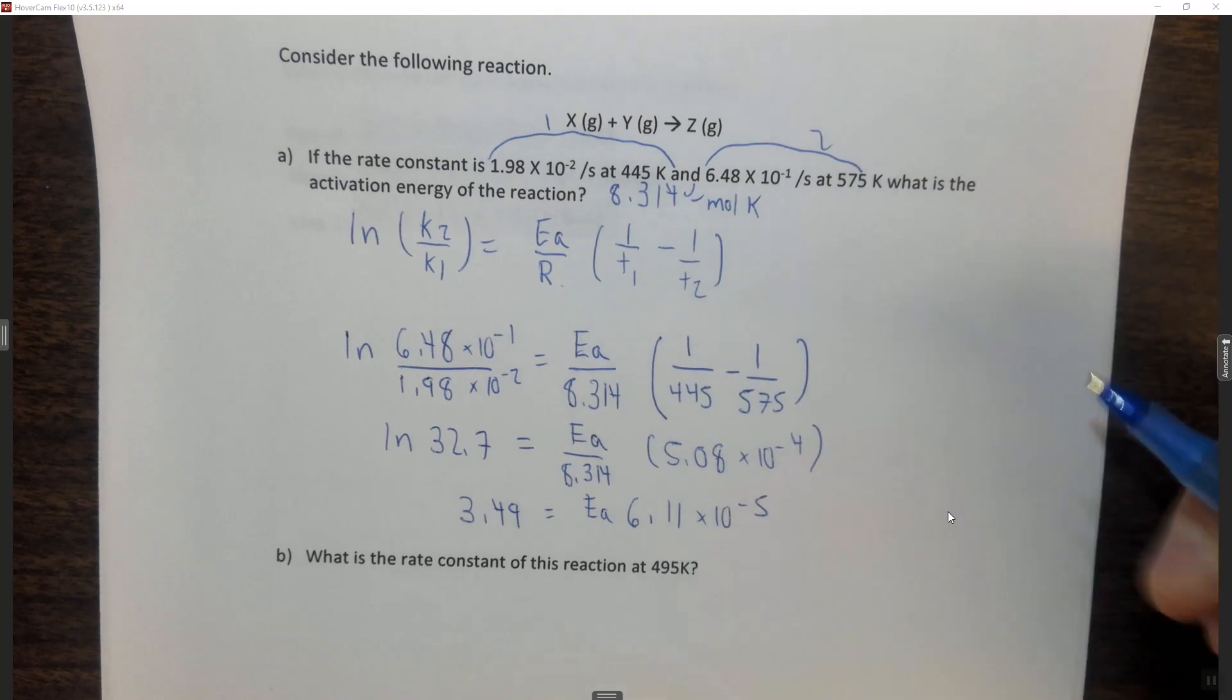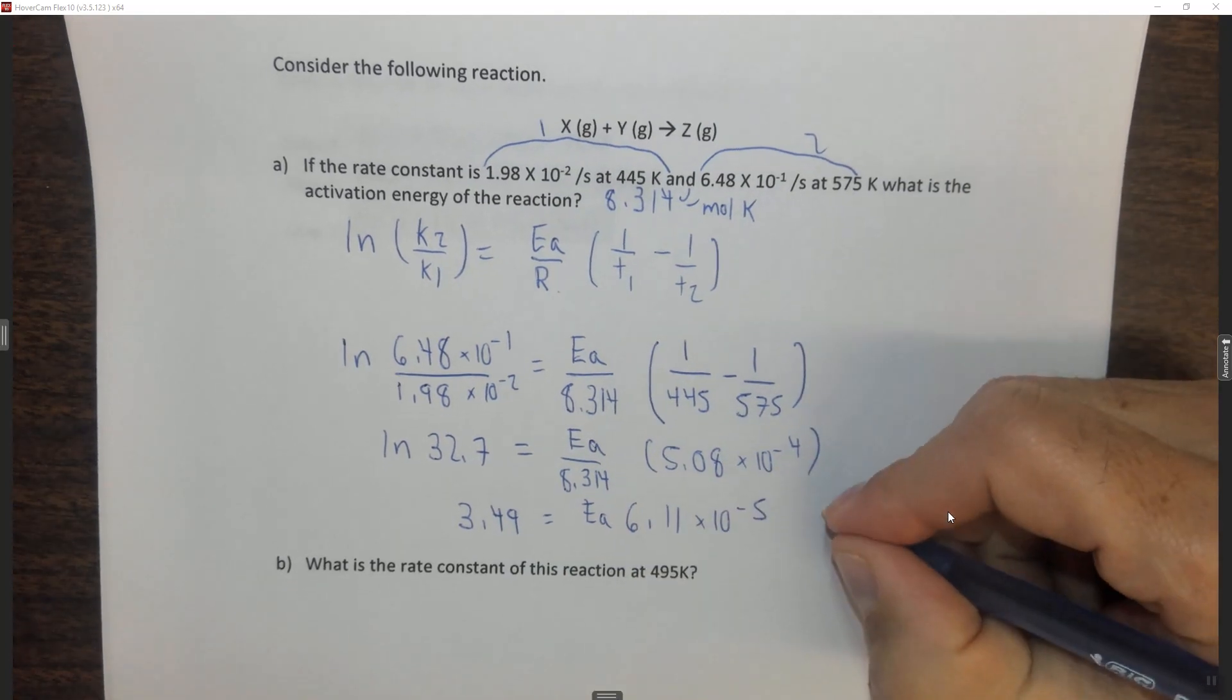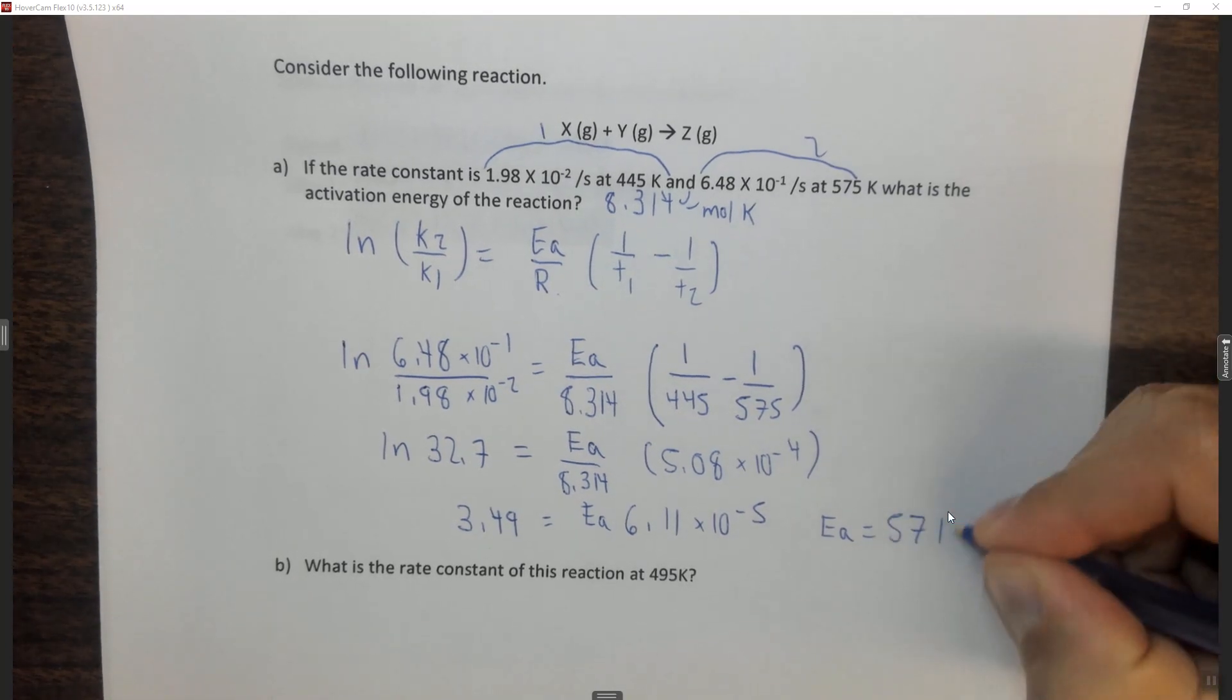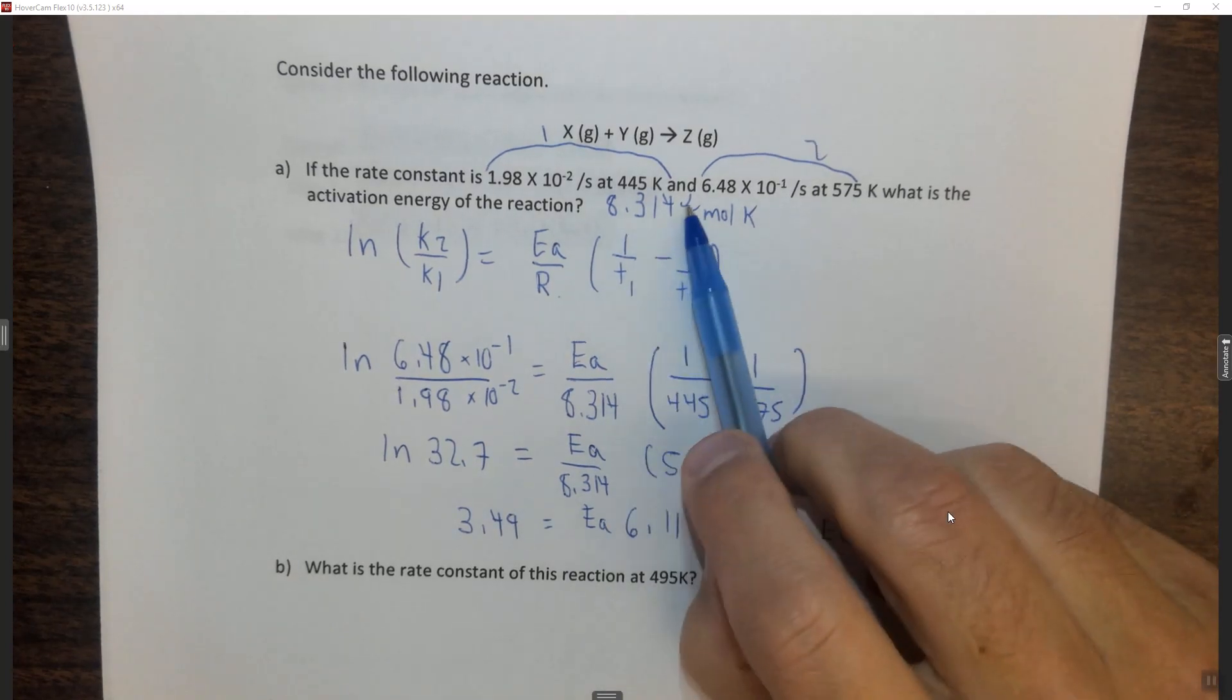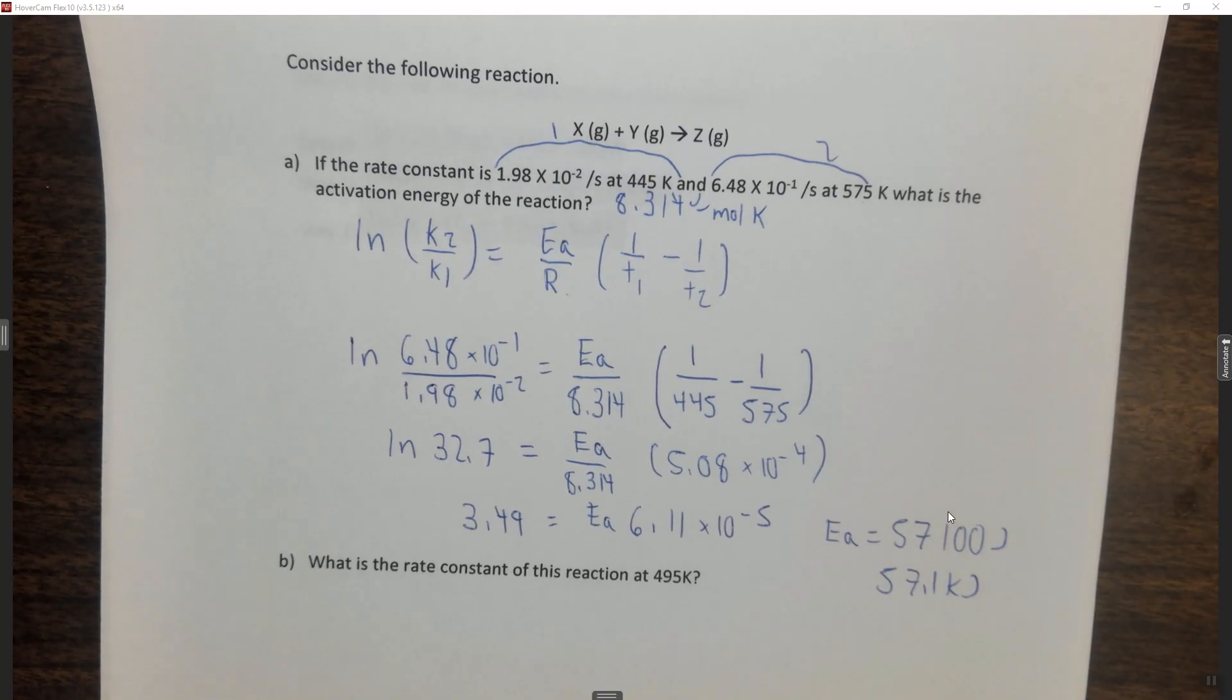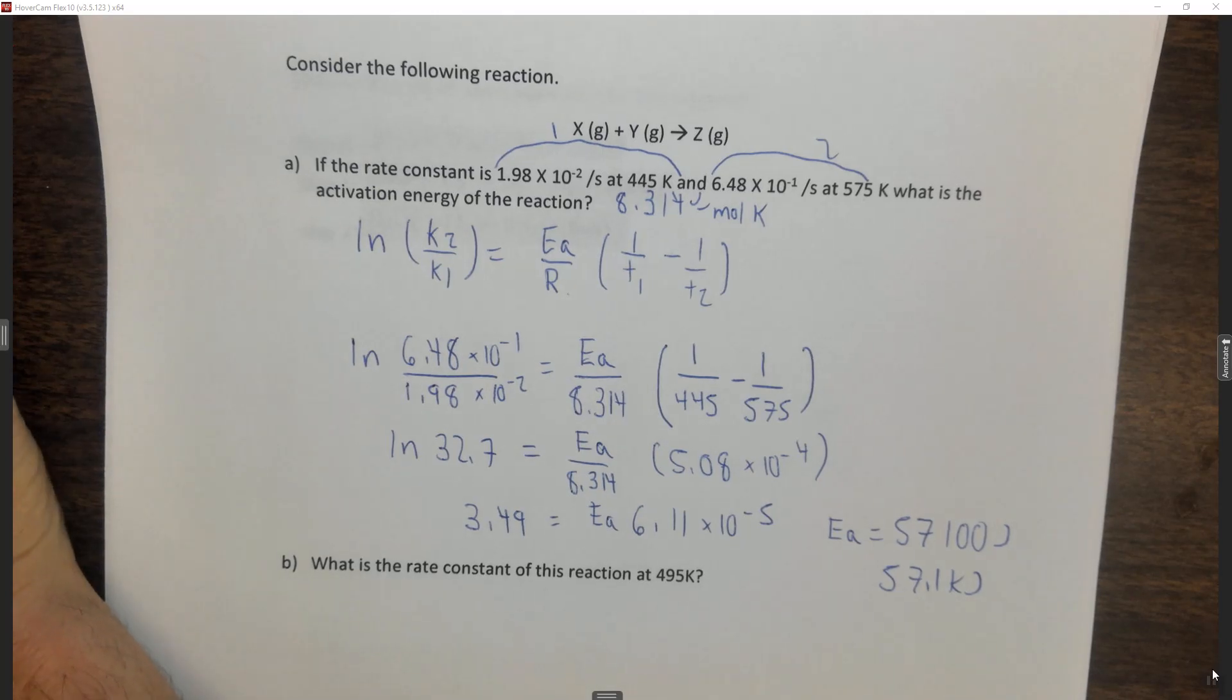Divide both sides by 6.11 times 10 to the minus 5 and you find that the activation energy of this reaction is 57,100. This comes out in joules because your constant's in joules per mole K, or you could use 57.1 kilojoules. Now the problem that we give you, you have to convert to kilojoules. So that is basically how you're going to do this question.